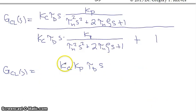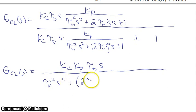So in the numerator we have just kc kp tau d times s, and all of that is then divided by tau n squared s squared plus 2 tau n zeta plus kc kp tau d times s plus 1. So what we see is that as you move this polynomial down into the denominator,